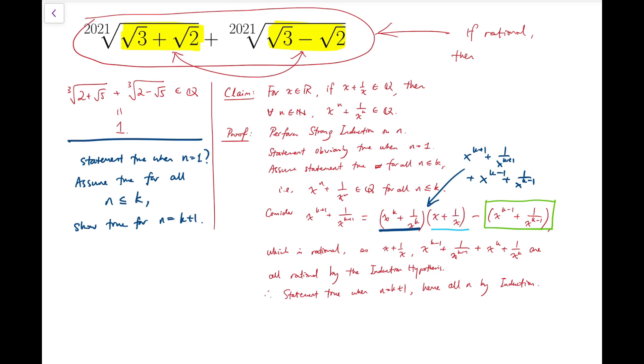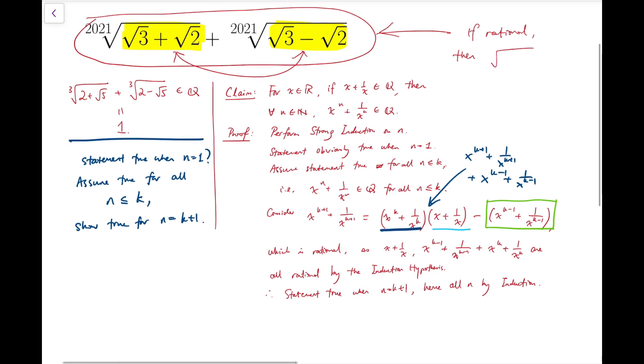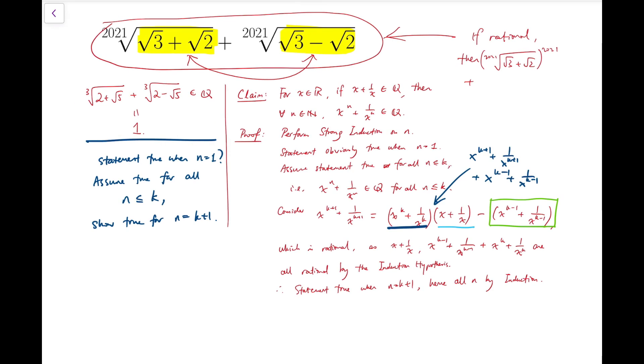The 2021st power of each term, which means if I take this number to the 2021st power plus the other term which is actually just its reciprocal, which equals to root 3 plus root 2 plus root 3 minus root 2, and that's 2 root 3, should also be rational.